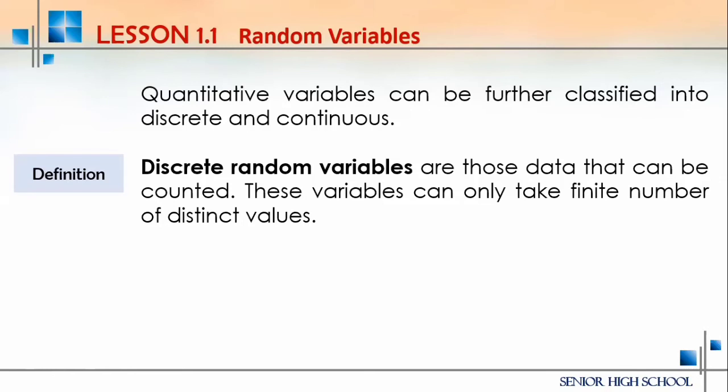Discrete random variables are those data that can be counted and can only take a finite number of distinct values. For example, the number of pieces of chalk in a box — let's say 30 pieces — you can count them, so that is a discrete random variable. Similarly, the number of ballpens in a box, most likely 12, is also discrete.